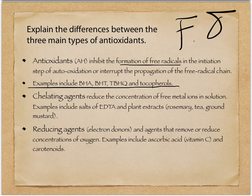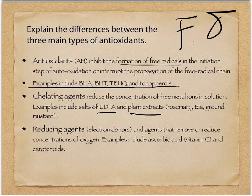Chelating agents reduce the concentration of free metal ions in the solution — they remove metal ions that could easily be oxidized by fixing around them. EDTA, ethyl diamine triacetate, forms around the metal ion and takes it out of solution so it cannot oxidize and provide electrons. There are also plant extracts that do the same thing, like rosemary tea and ground mustard. EDTA is the big one used as a food additive to remove free metal ions from solution.